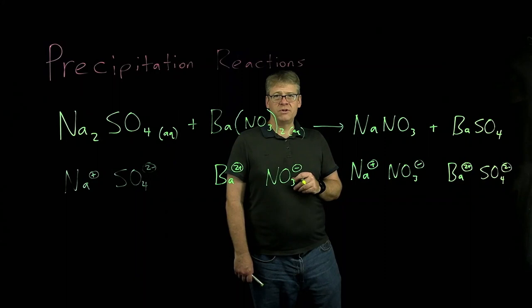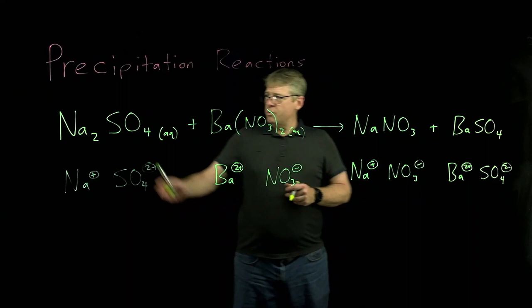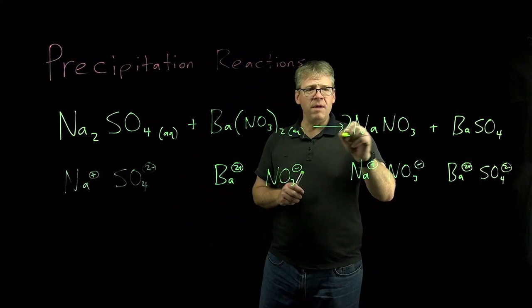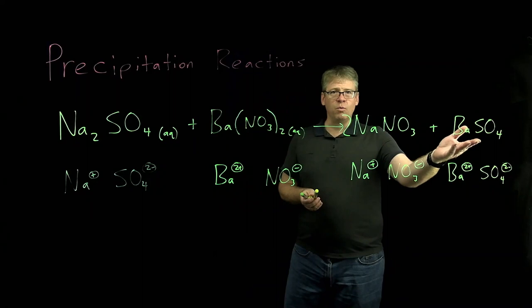Now that we've predicted our products, we can balance the equation. We actually had two sodiums and two nitrates in our reactants, so we'll make two sodium nitrates. We had one barium and one sulfate, so we'll make one barium sulfate.